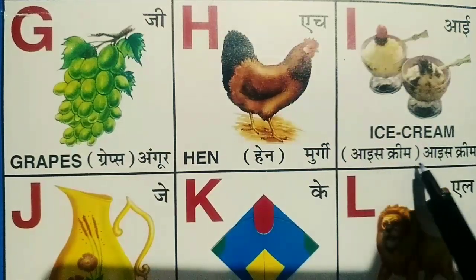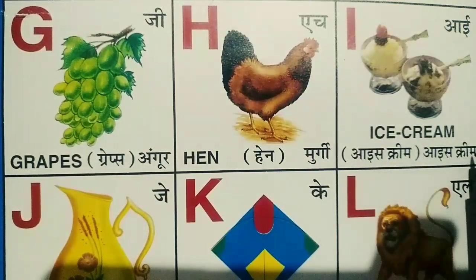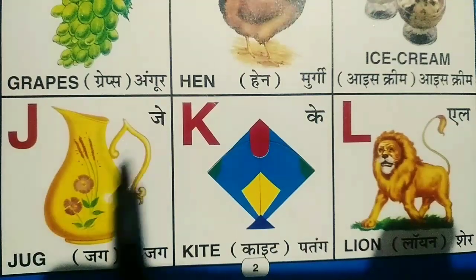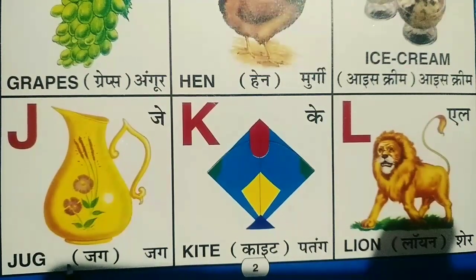I for ice cream. Ice cream means ice cream. J for jug. Jug means jug.